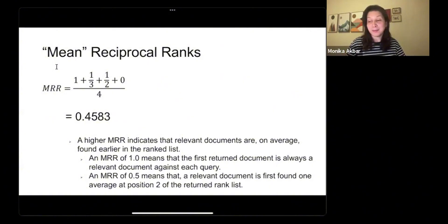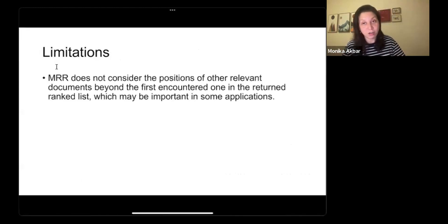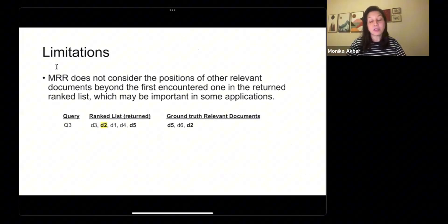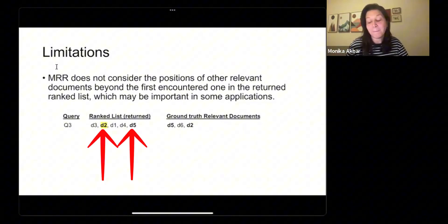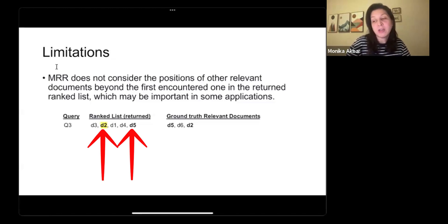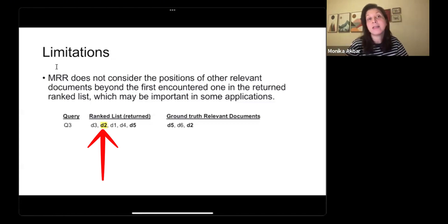With any system, there are limitations, and this evaluation metric is no different. Mean reciprocal ranking does not consider the position of relevant documents beyond the first one it finds, which may be important for some applications. For example, with query 3, we had two relevant documents, but we ignored document 5 further down the list and only used document 2 at position 2. In any case, it's a good evaluation metric to assess how a system is doing in returning the right answers. That's all for today — thank you for your time.